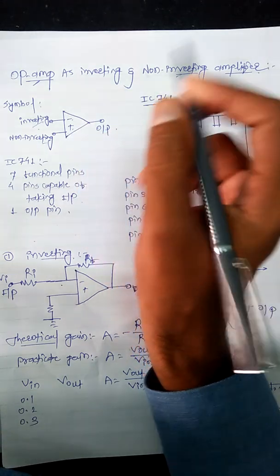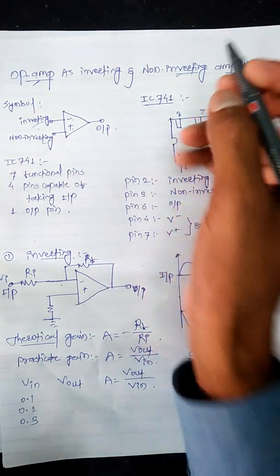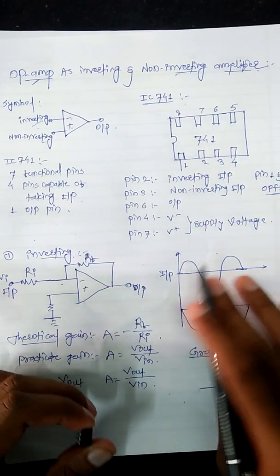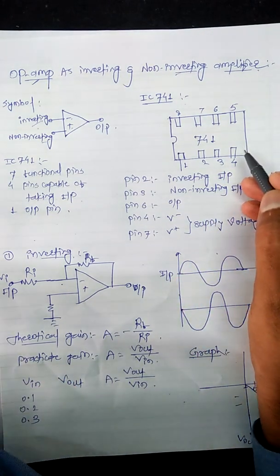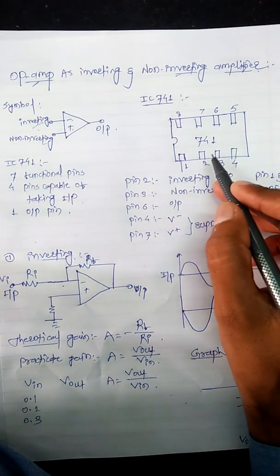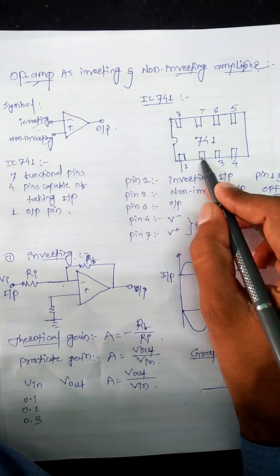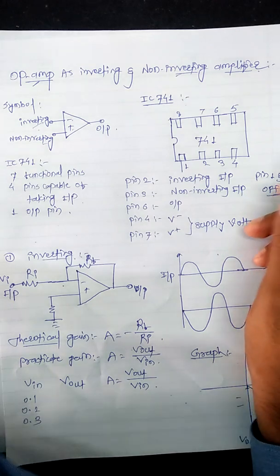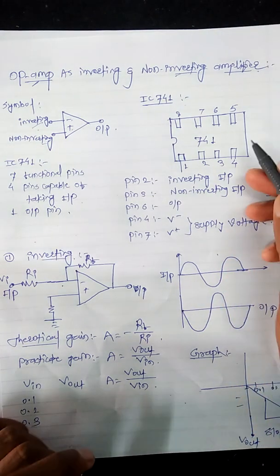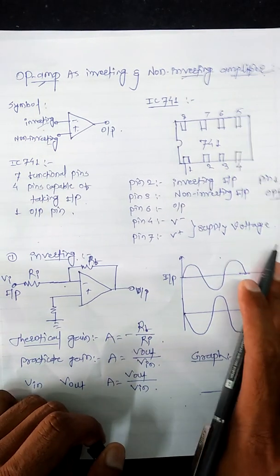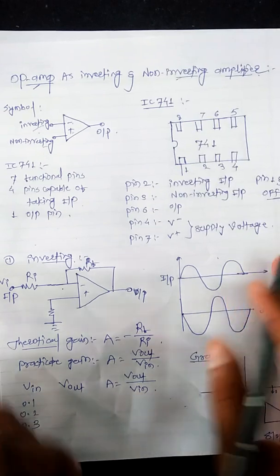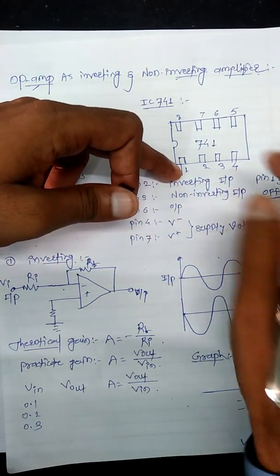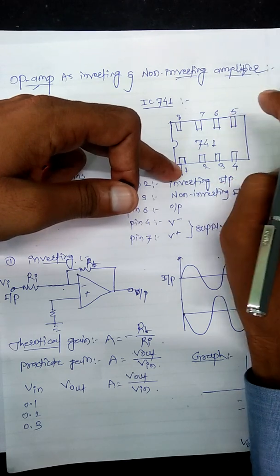For this practical we require the IC741. IC741 is the general pin diagram — it is an 8-pin IC. Each pin has its own function. Pin number 1 is the offset null and pin number 5 is also the offset null.